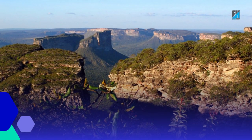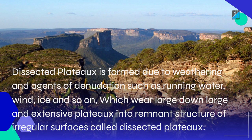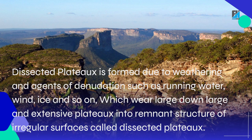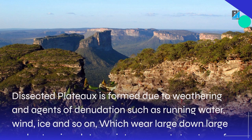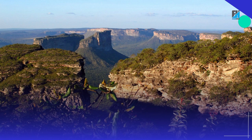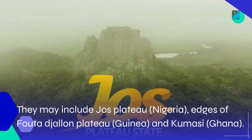Dissected plateaus are formed due to weathering and agents of denudation such as running water, wind, and ice, which wear down large and extensive plateaus into remnant structures of irregular surfaces. Examples include the Jos Plateau in Nigeria, the edges of the Futa Jallon Plateau in Guinea, and Kumasi in Ghana.